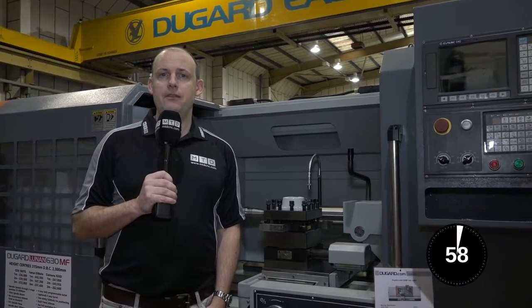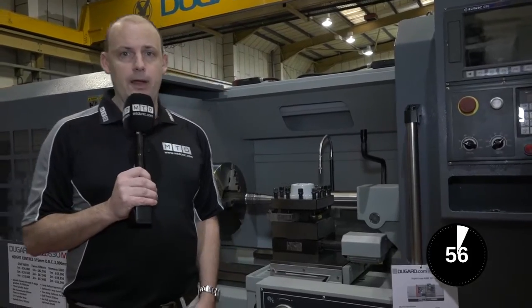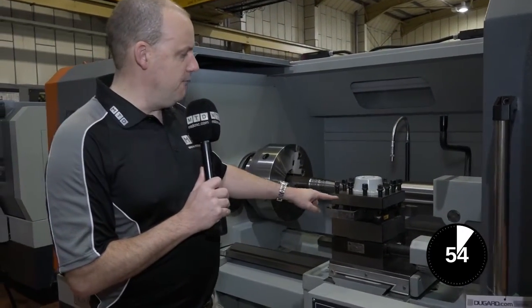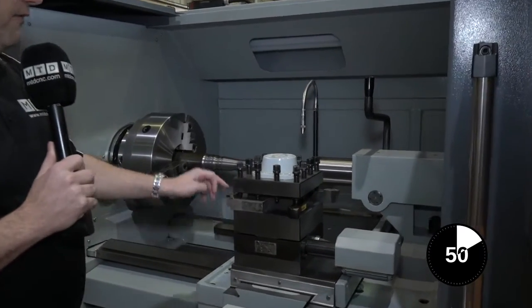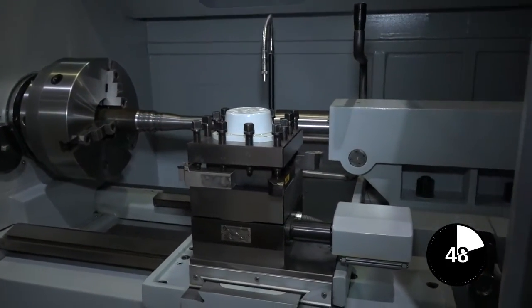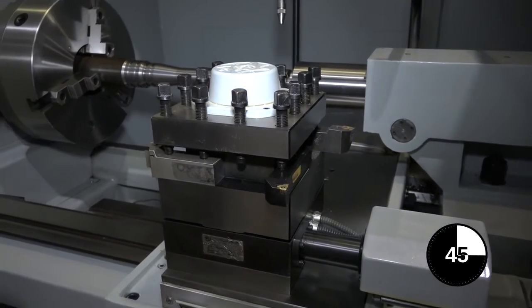This is an educational video about the differences between a tool post and a turret. A tool post is simply four sides here and this is activated manually. It can hold four tools and it will turn your components. This is a tool post.